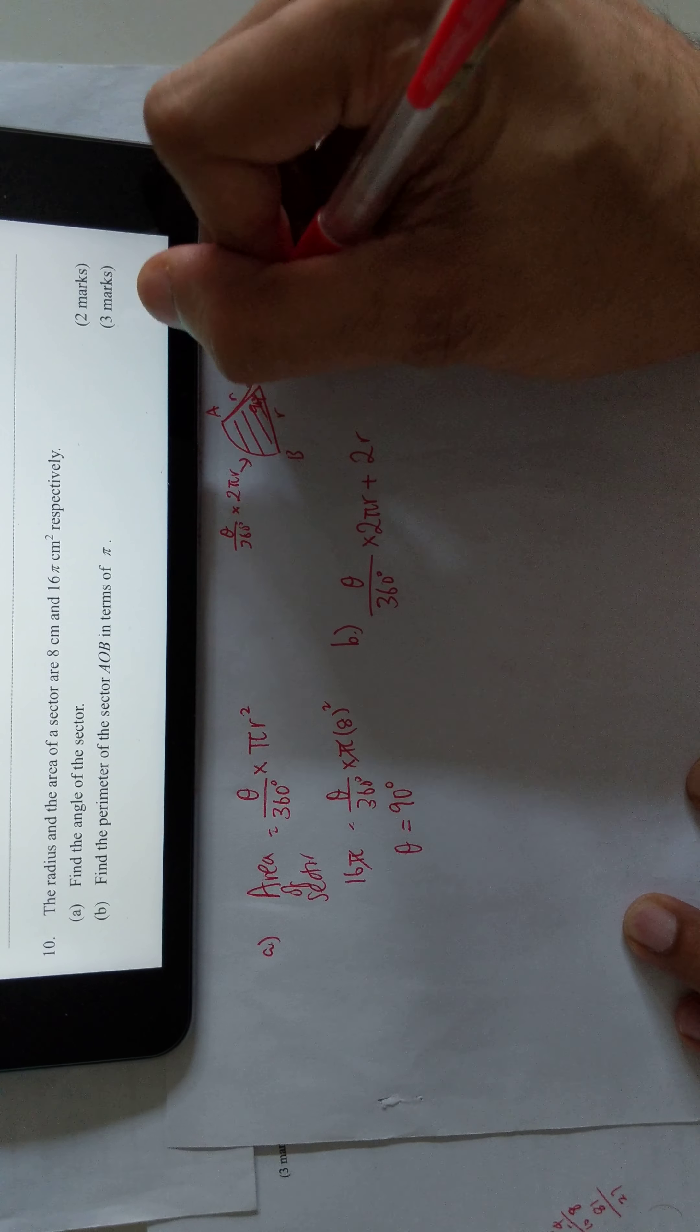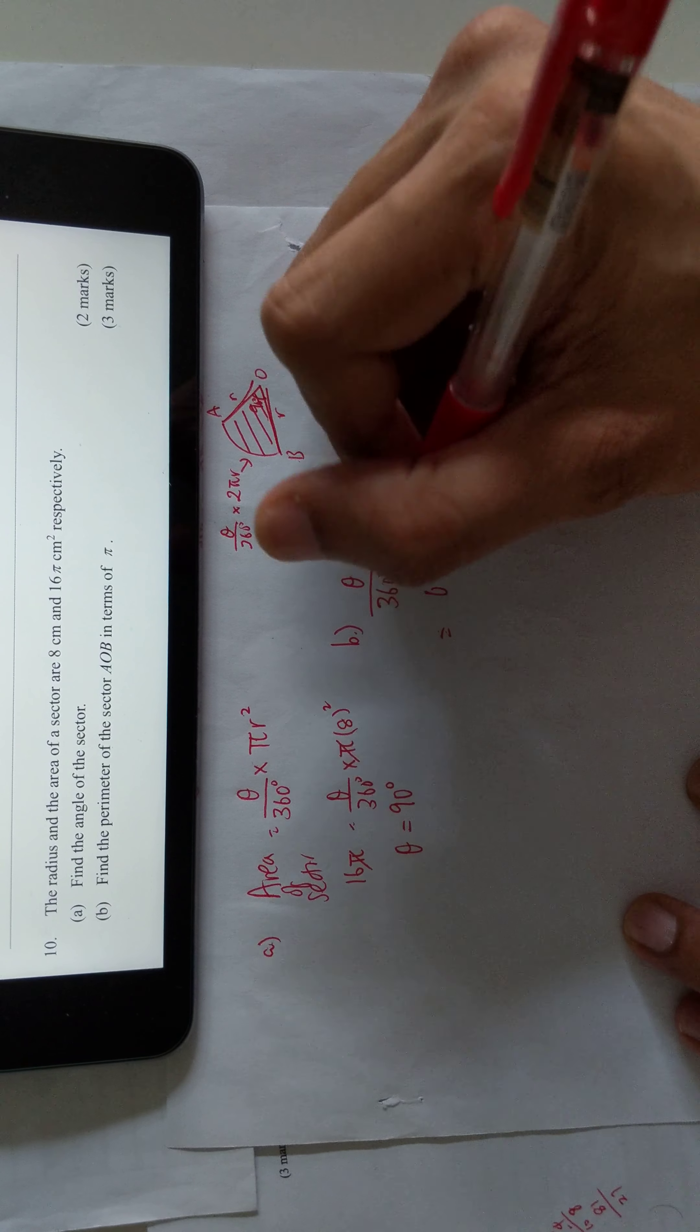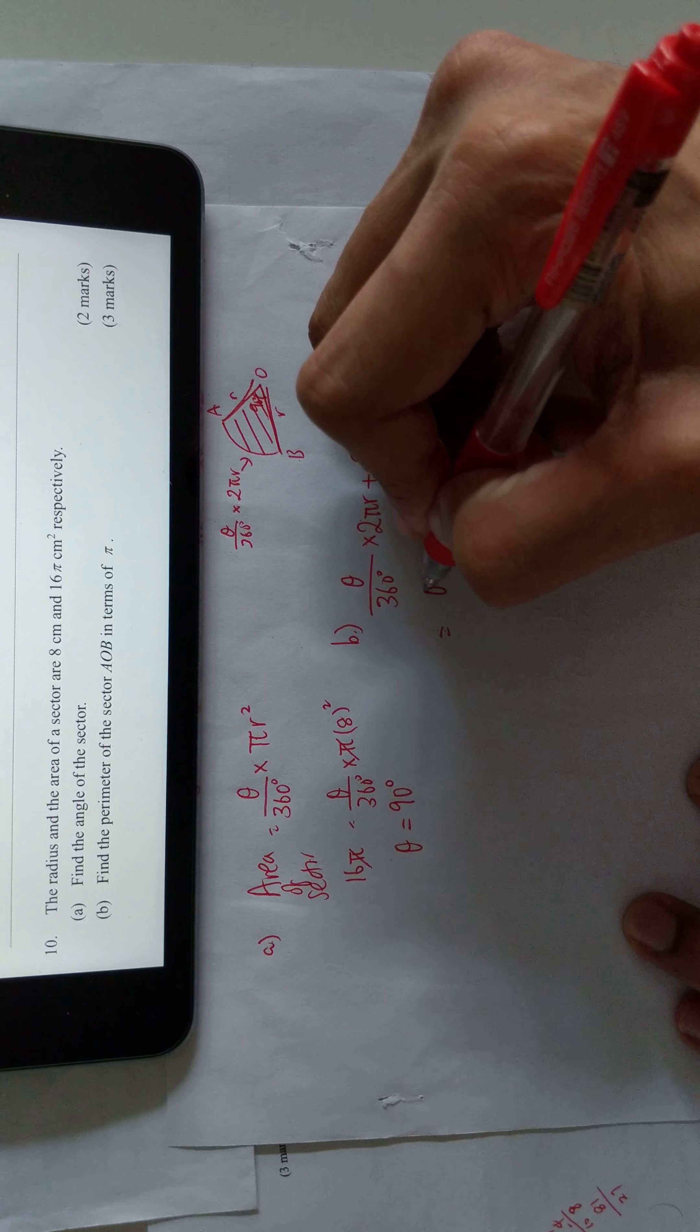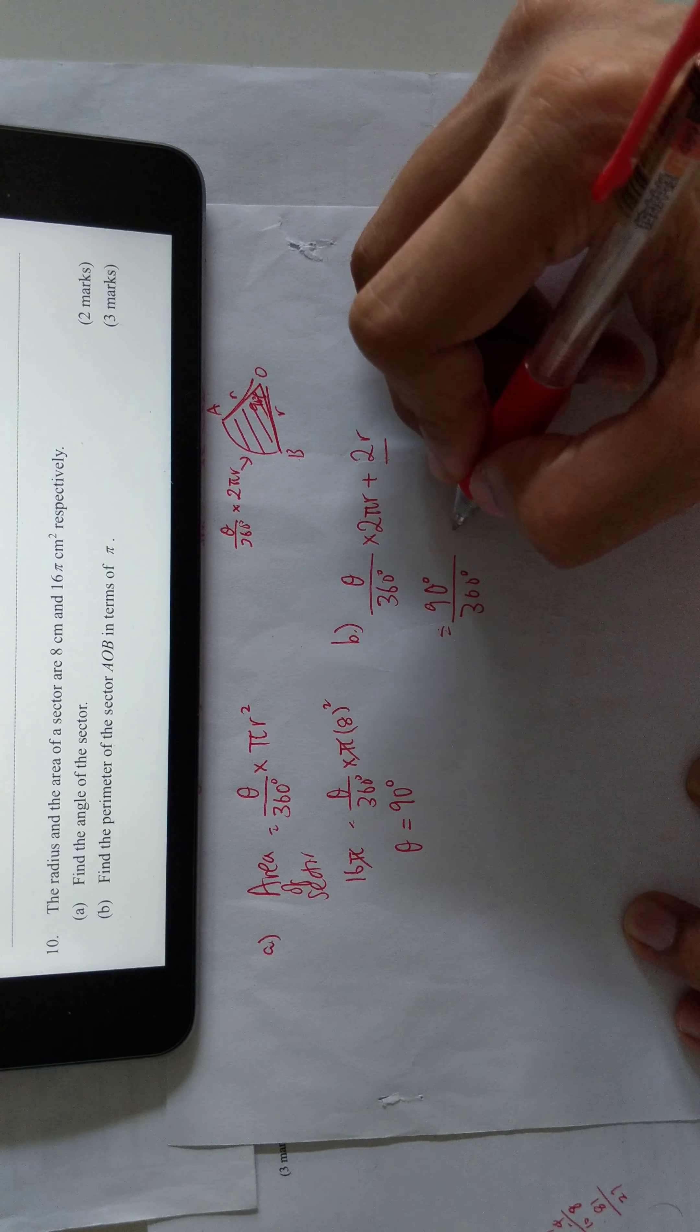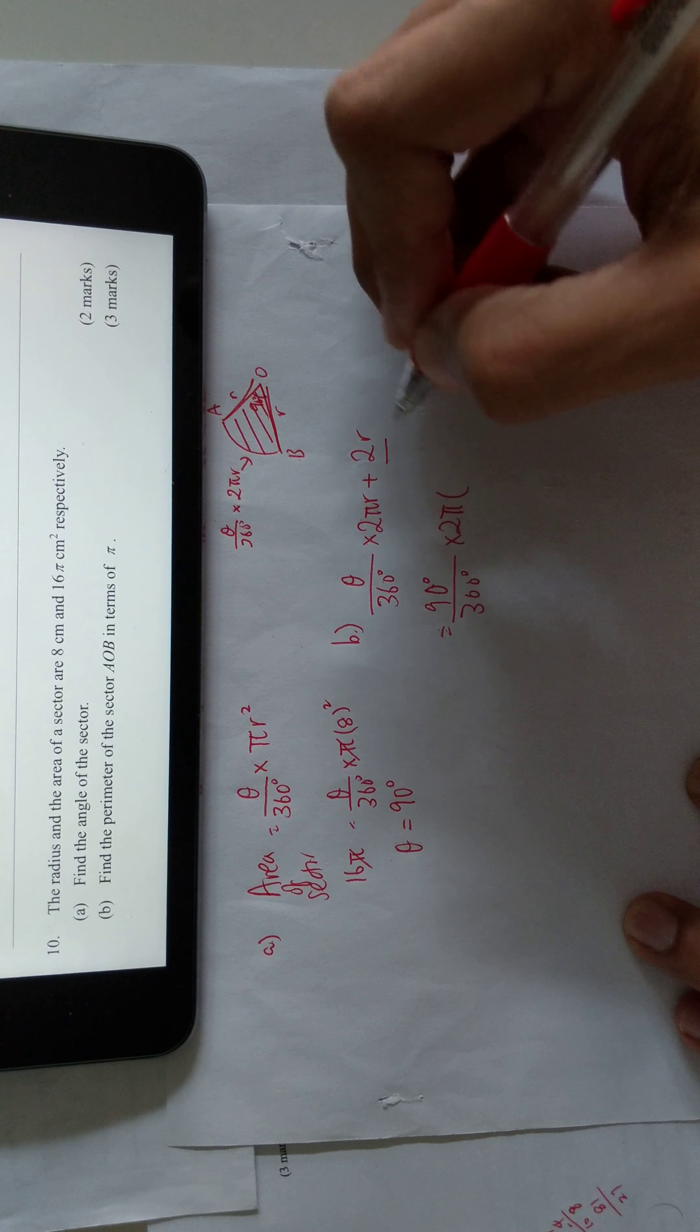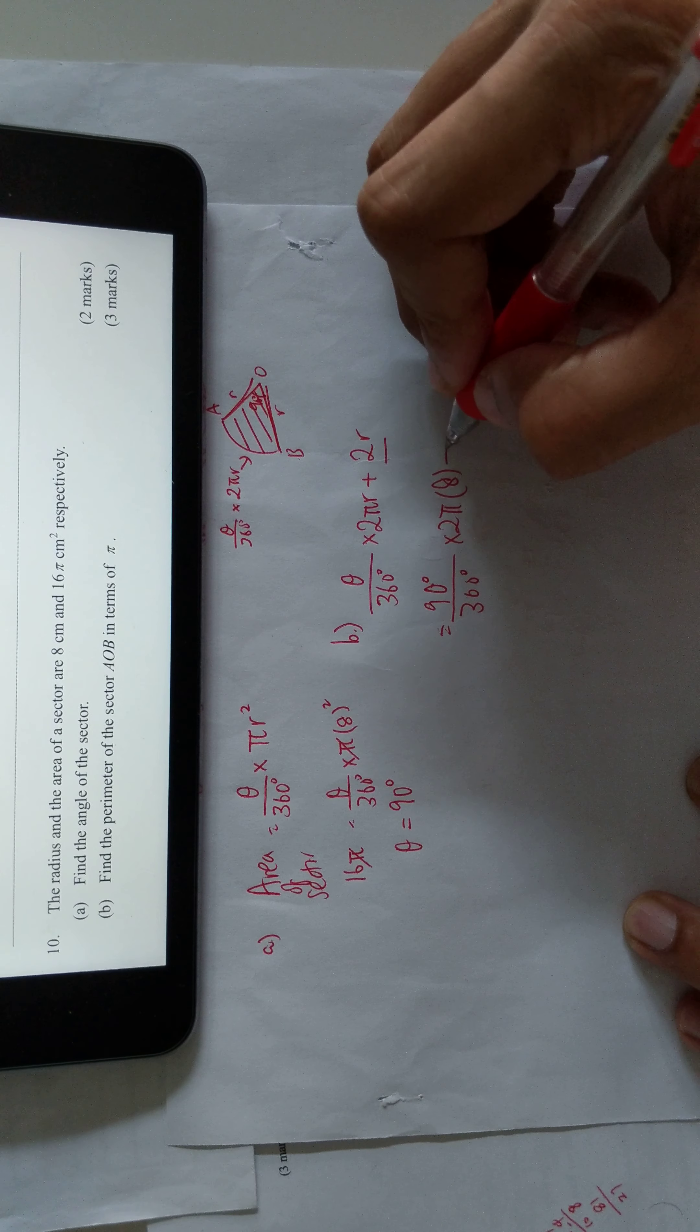Now theta is 90, r is 8, which gives us the expression plus 16.